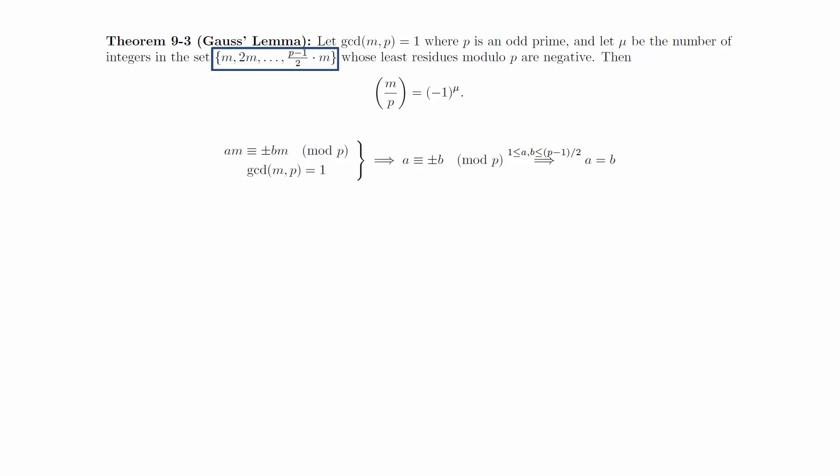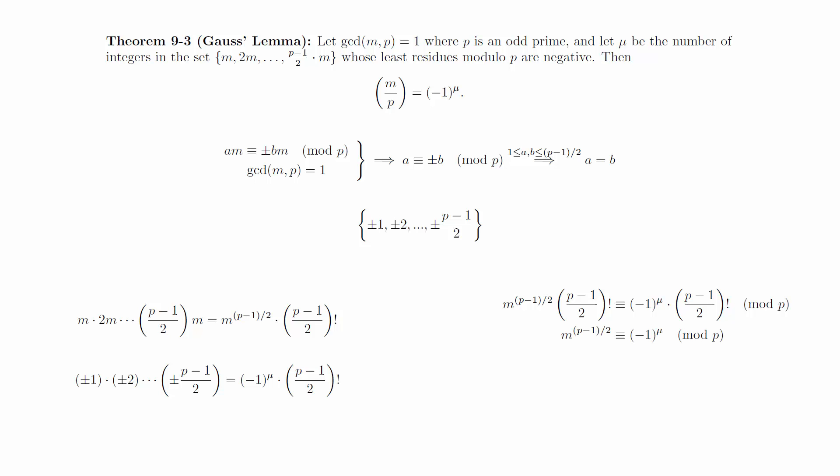Therefore, this list reduces to the following collection of least residues. We don't know exactly which values have a negative sign, but we do know that there are mu of them. We now multiply the multiples of m together and we multiply the list of least residues together. These are equivalent to each other modulo p.